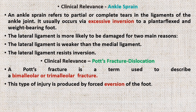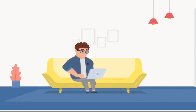Clinical relevance — ankle sprain. An ankle sprain refers to partial or complete tears of the ankle ligaments, usually occurring via excessive inversion of a plantar flexed weight-bearing foot. The lateral ligament is more likely damaged because it is weaker than the medial ligament and resists inversion; the anterior talofibular ligament is most at risk. A Pott's fracture describes a bimalleolar or trimalleolar fracture produced by forced eversion. Forced eversion pulls on the medial ligaments producing an avulsion fracture of the medial malleolus; the talus moves laterally breaking off the lateral malleolus; the tibia is then forced anteriorly, shearing off the distal and posterior part against the talus.